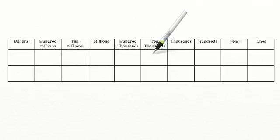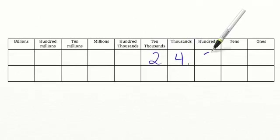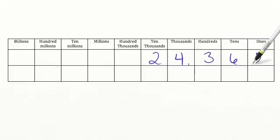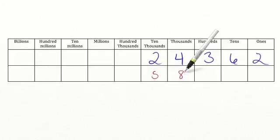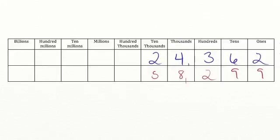Let's say we have the number 24,362 and we want to compare it to the number 58,299. Do you know how you can compare these two numbers? Well, our first step is you have to line up the numbers.